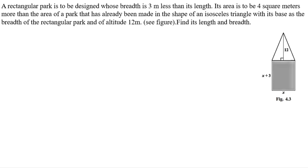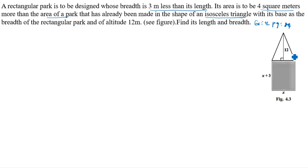Hi friends, today we are going to learn about a quadratic equation example problem. This is Example 12, page number 84 in NCERT CBSE grade 10. A rectangular park is to be designed whose breadth is 3 meters less than its length. Its area is to be 4 square meters more than the area of a park already made in the shape of an isosceles triangle, with its base as the breadth of the rectangular park and altitude 12 meters. Find its length and breadth.